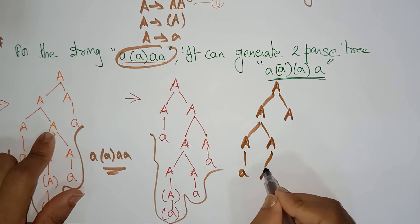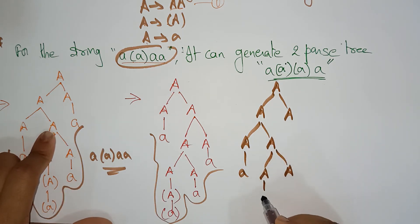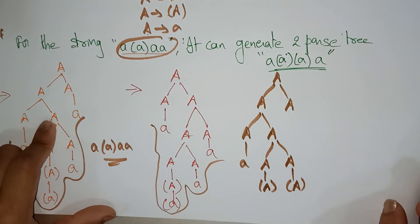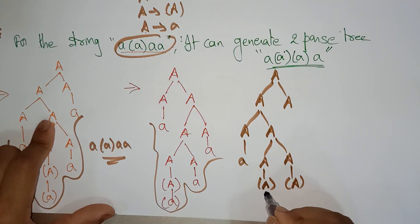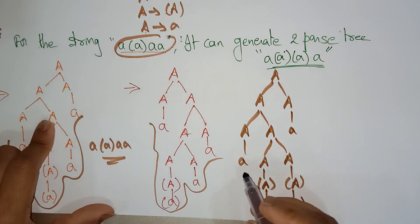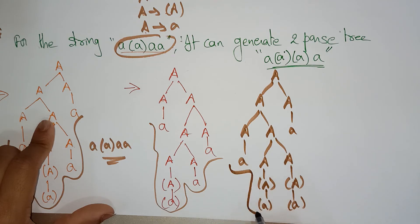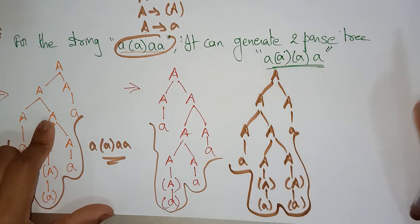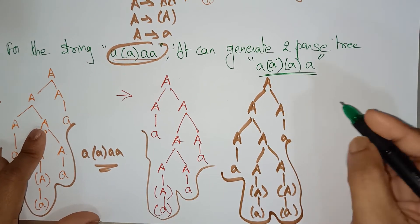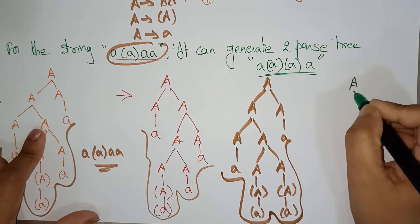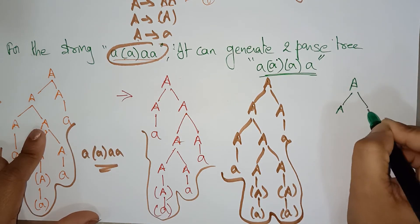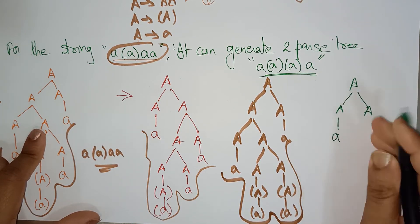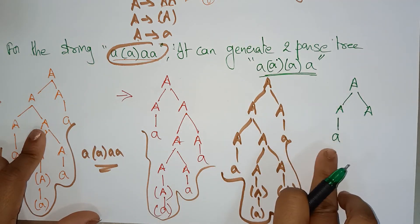Again, this A is replaced with a, and this is replaced using the second rule. This is replaced with A, and this is a. Did you get the string a, a within parentheses, a a within parentheses, a and a? I can represent this string in another way also. In the first leftmost derivation, I replaced A with small a according to the third rule.